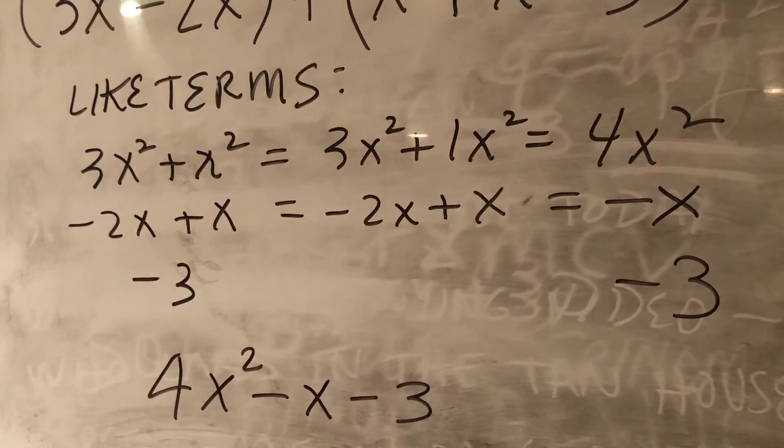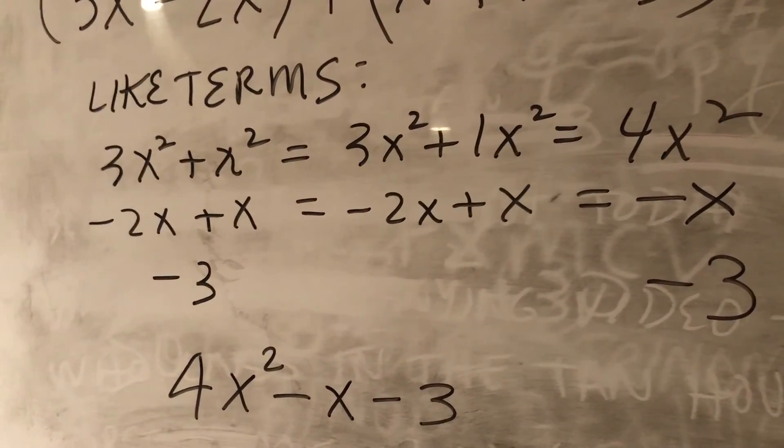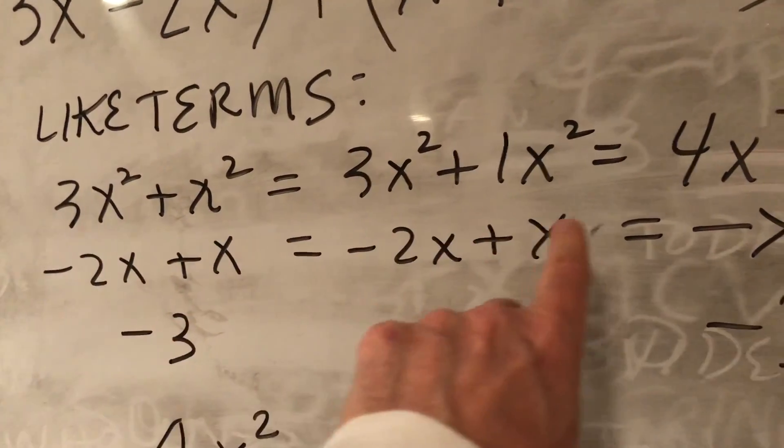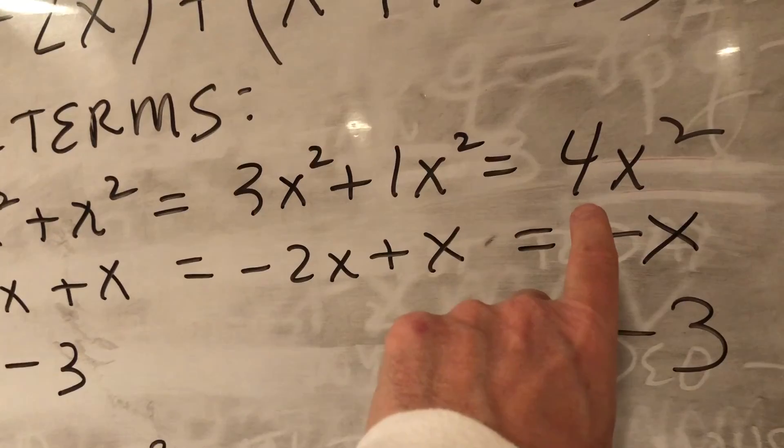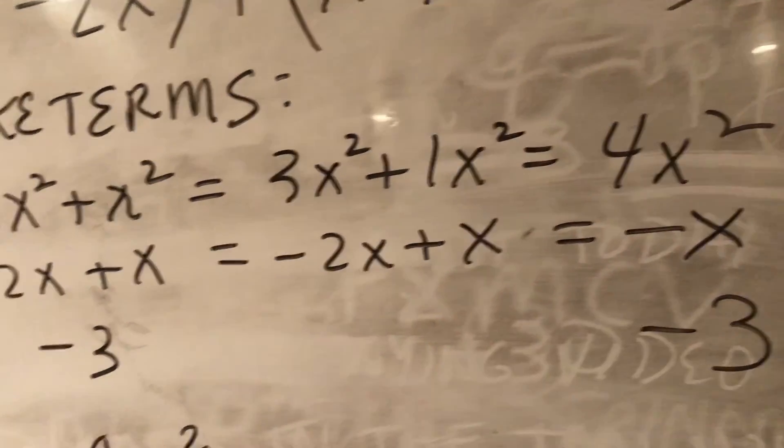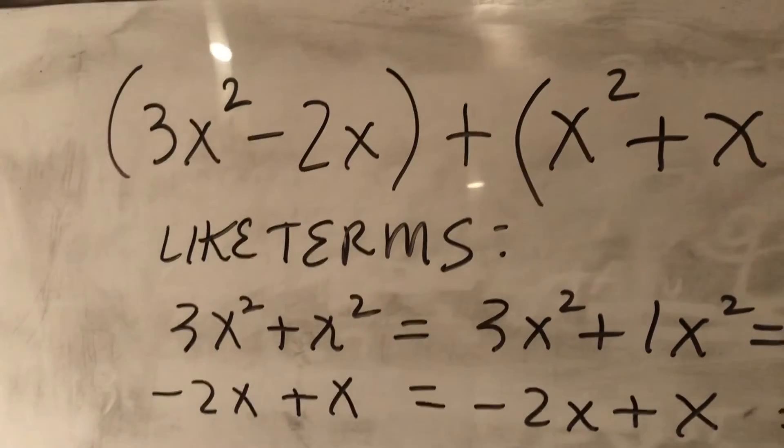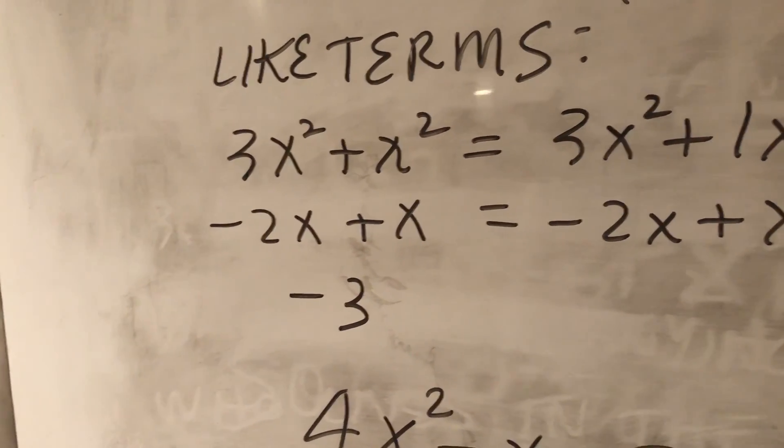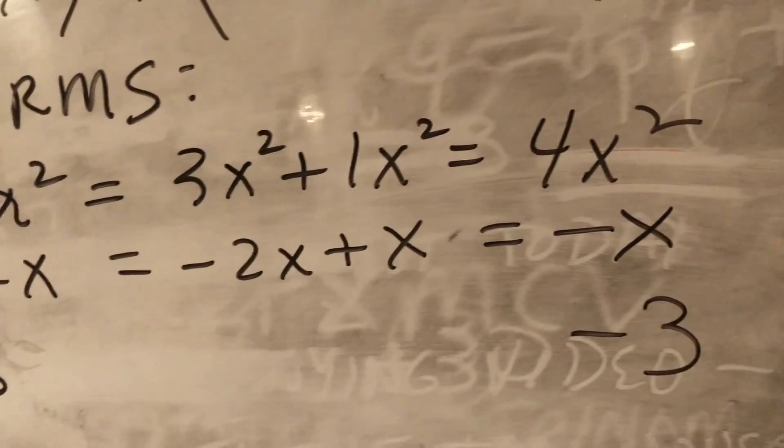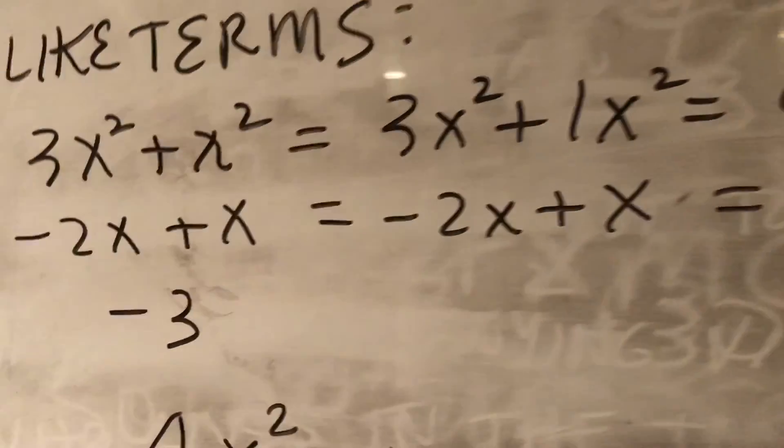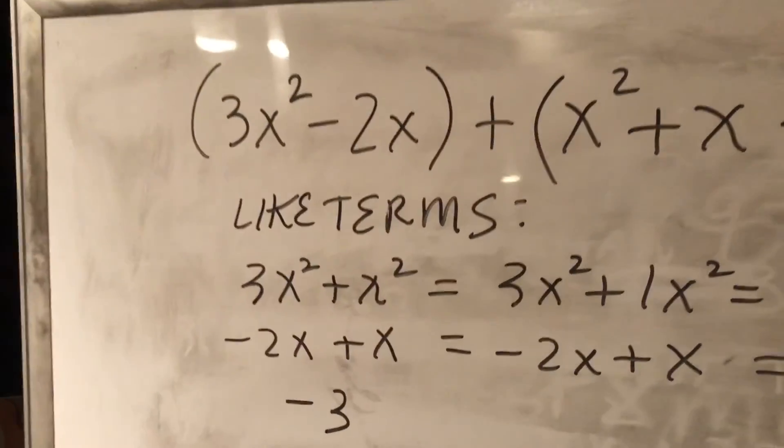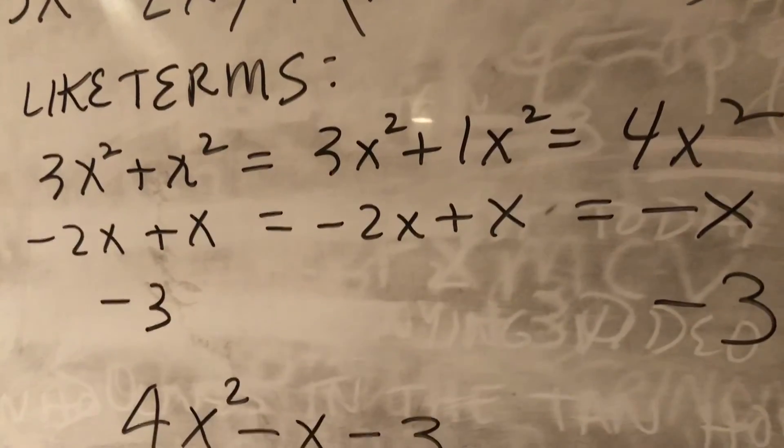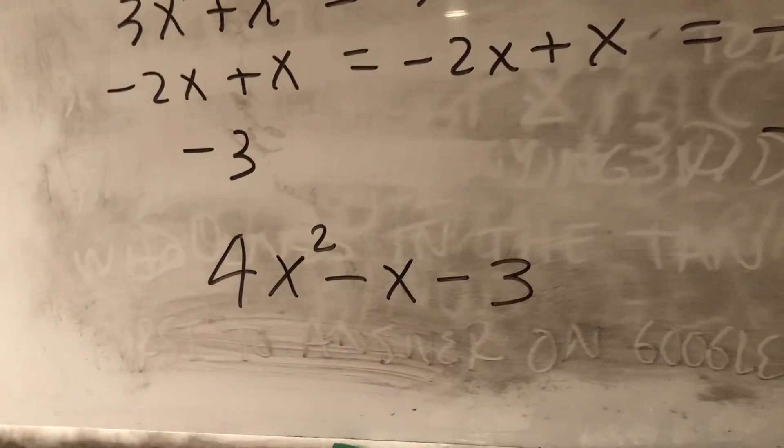Now you know from yesterday's lesson and the one the day before what like terms look like, so let's put those together. Now 3x squared plus x squared, we add the coefficients 3 plus 1 and we get 4x squared. Then we find that we have x's so we put those together, negative 2x plus x, and we add those and we get negative x. And then the constant negative 3, there isn't a constant in that first quantity but there is in the second one, so we put negative 3 at the end and here is our answer.